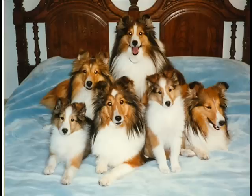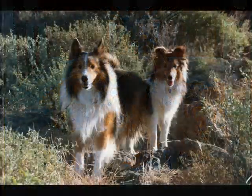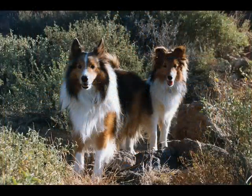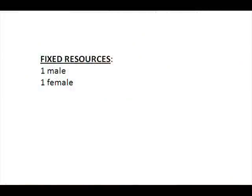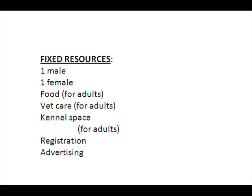Well, first of all, it would probably be a good idea to have two adult dogs, a male and a female. Without this resource, I can't even consider producing any puppies. What else will I have to have to even attempt to produce? What about food, vet care, and kennel space for the adults?